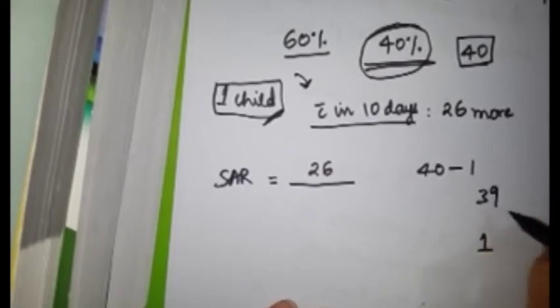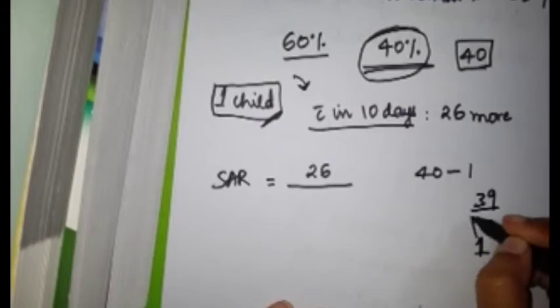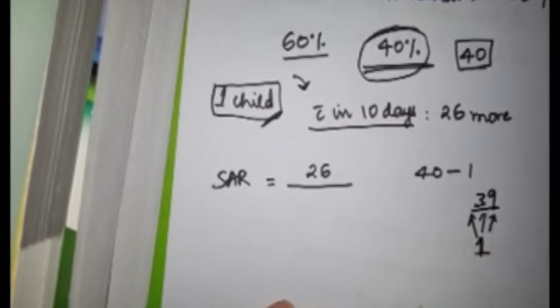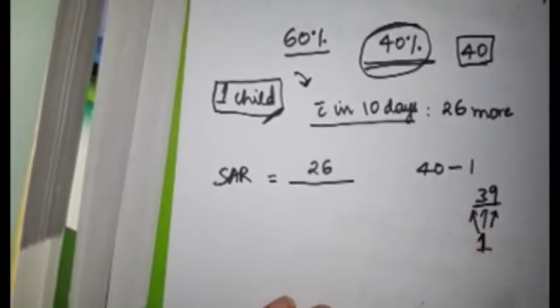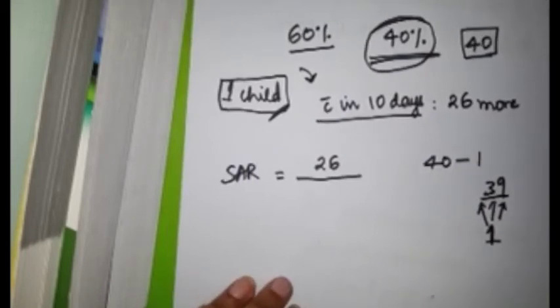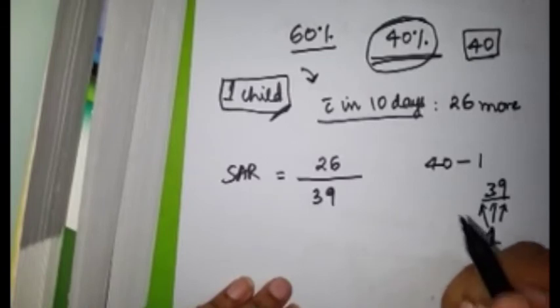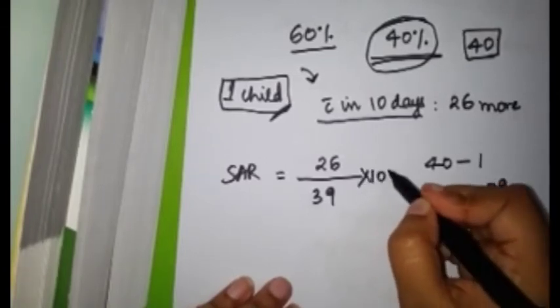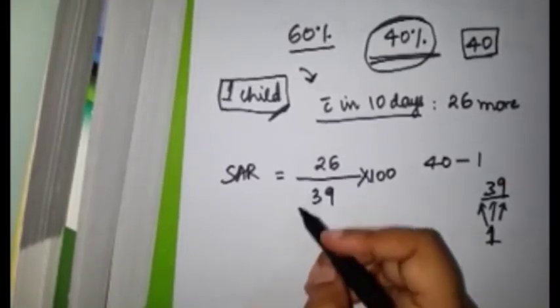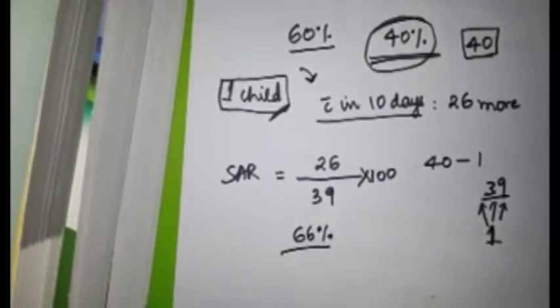Once the child has already developed it, it becomes 40 minus 1, so one child to 39 children. This becomes the susceptible. You have to see that this child infected how many out of 39. So total number of susceptibles become 39, times 100. This is somewhere I think 66%.